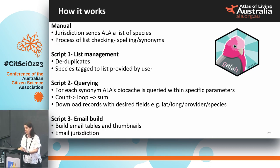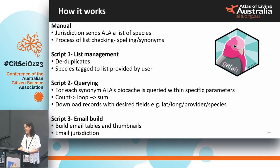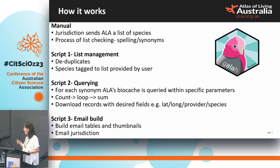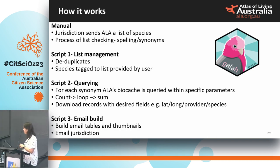Here's how the system works. We run it out of R. There's a manual process first where jurisdictions send us a species list of interest; my colleague Andrew processes the list and checks for taxonomy and spelling errors. Then there's a three-step process in R: one step deduplicates records, one tags each list to each user, then it goes into creating our bio-cache where species occurrence records sit, and it downloads the fields we send in the alert email. We then build the tables and the thumbnail, and we've just automated this alert functionality to send out an email to the user if the species comes into the ALA over a given week or period.